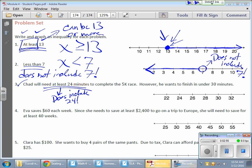He wants to complete a 5K race. However, he does want to finish in under 30 minutes, which means he doesn't want to actually hit 30 minutes - he wants to beat 30 minutes. So this does not include the 30. I'm going to keep an open 30.